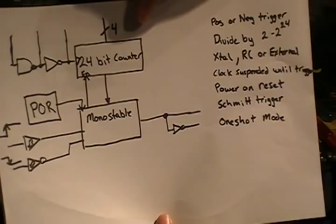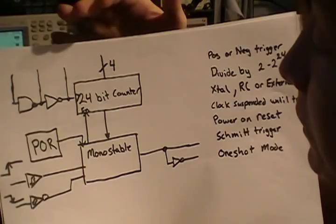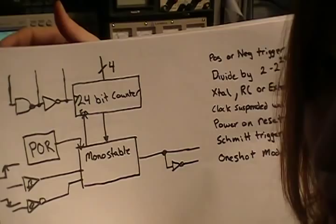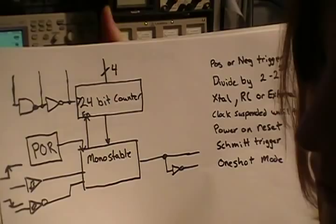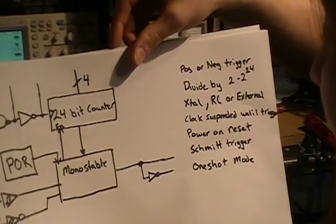It also has a clock suspend, so when this is not triggered and the counter is not running, the clock can also be suspended, so that's a pin that you can toggle and put it into a very low power mode. And since it's CMOS, its quiescent current is going to be very low and potentially could make some devices that would have very long battery life.